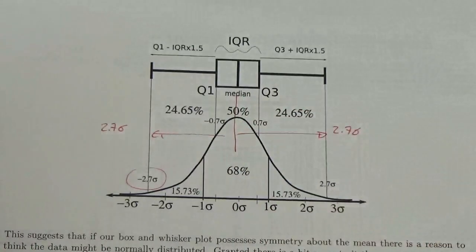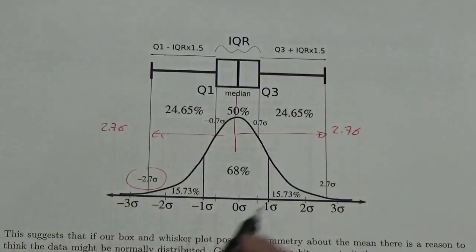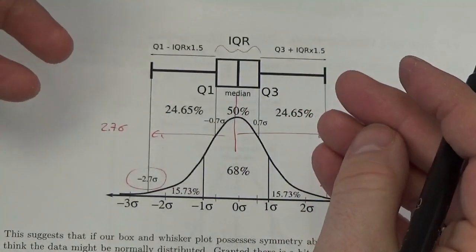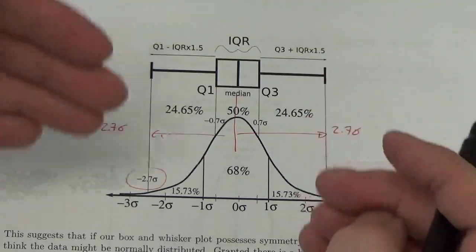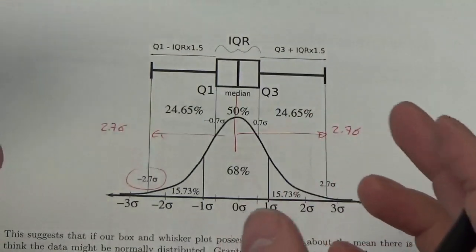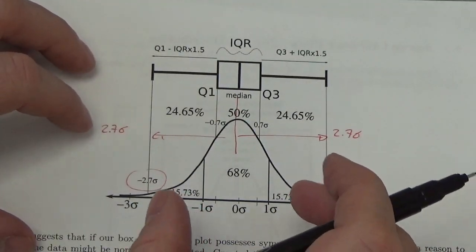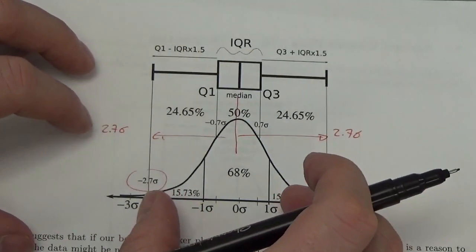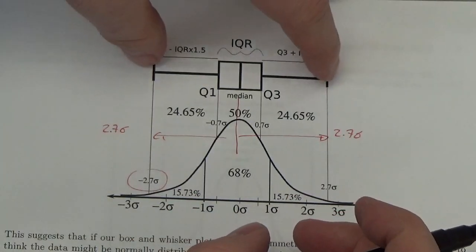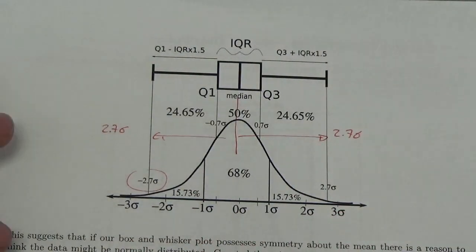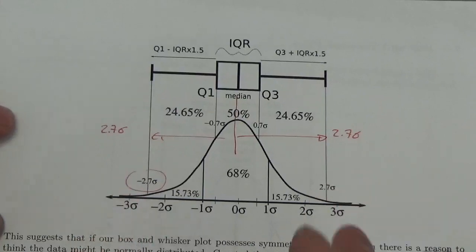Where the mean is straight down the middle there. And so, I can take that box and whisker plot here. And there's some nice kind of comparisons in terms of the distribution of data on the normal distribution or the bell curve and what we're seeing here. Now, you got to play with it a little bit to make it perfect, but still.